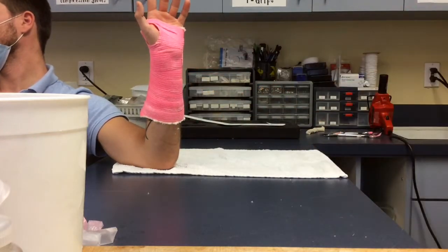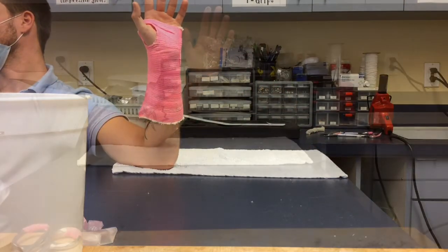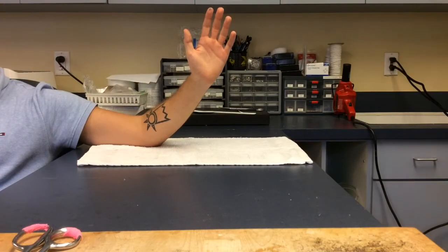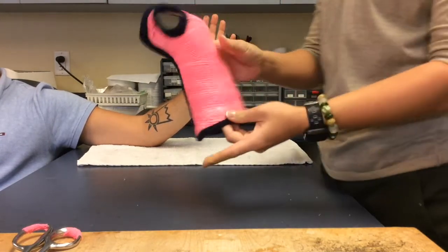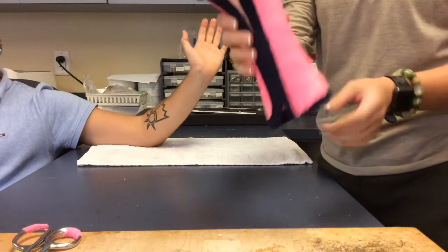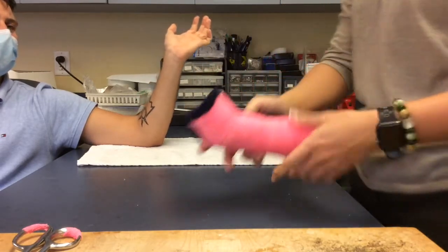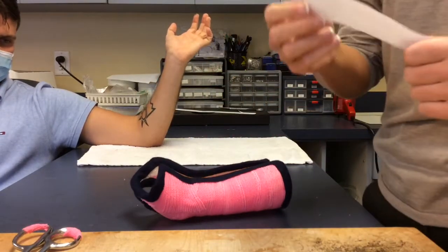Once you do that, you can start applying the soft edging around all of the edges of the cast, as you can see there. Don't forget the thumb hole. That is very important for the patient and so it's comfortable.